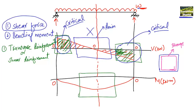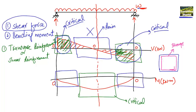The mid-region is critical for bending moment. Near the supports, the bending moment is close to zero, so we can ignore those regions in bending design. The bending moment diagram tells us where the maximum bending moment occurs — in this case, the red line indicates the peak at midspan.